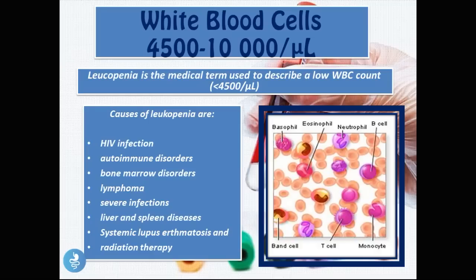Leukopenia is the medical term used to describe a low white blood cell count — that is, a value less than 4,500 white blood cells per microliter. The causes of leukopenia include HIV infection, autoimmune disorders, bone marrow disorders, lymphoma, severe infections, liver and spleen diseases, systemic lupus erythematosus, and radiation therapy.